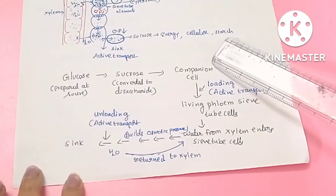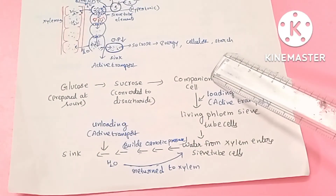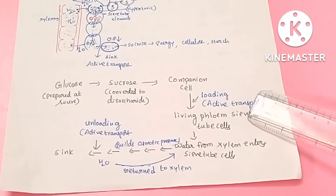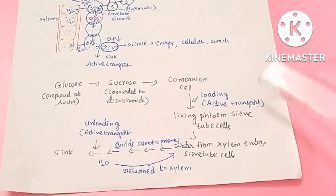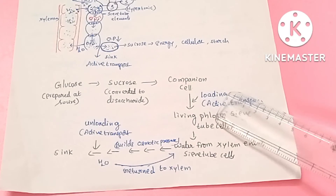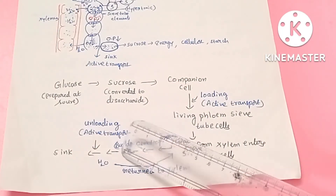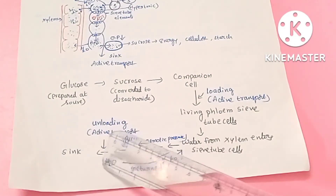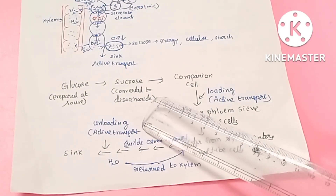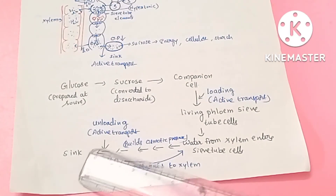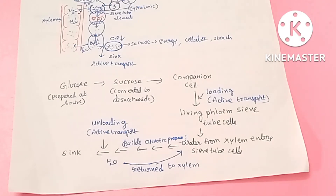To summarize as a flow chart: glucose at the source is converted to sucrose, which moves into companion cells and is actively loaded into phloem sieve tube elements. This creates a hypertonic condition, so water enters by osmosis, increasing osmotic pressure. This pressure drives the flow toward the sink. At the sink, sucrose is unloaded by active transport, osmotic pressure decreases, and water returns to the xylem. This is the pressure flow hypothesis by Munch — food material can be translocated through this mechanism.